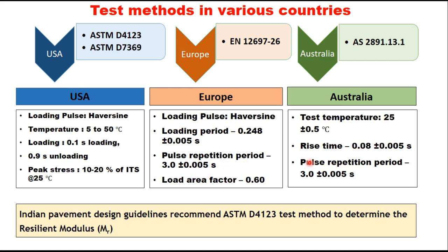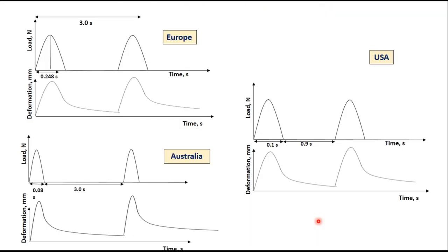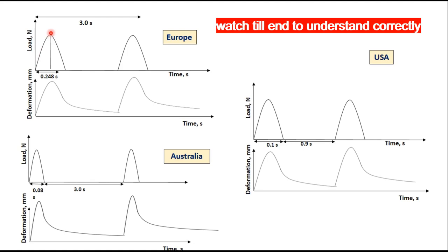The key difference lies in the pulse repetition period and the loading period. Indian pavement design guidelines recommend ASTM D4123 test method to determine the resilient modulus, and in this session we will discuss this method. In the European method, the load is applied for 0.248 second and total pulse time is 3 seconds, with the pulse repeated after every 3 seconds as a rest period.